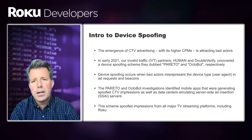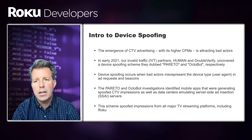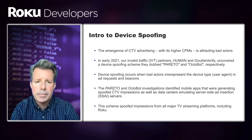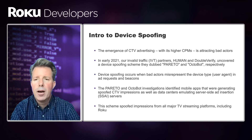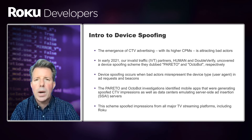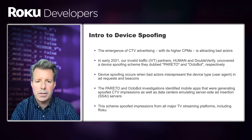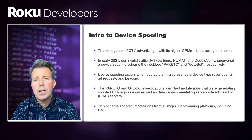Device spoofing occurs when bad actors misrepresent the device type, specifically the user agent, in ad requests and measurement beacons. The Pareto and Octabot investigations identified mobile apps that were generating spoofed CTV impressions, as well as data centers emulating server-side ad insertion, or SSAI, servers. This scheme spoofed impressions on all major TV streaming platforms, including Roku.